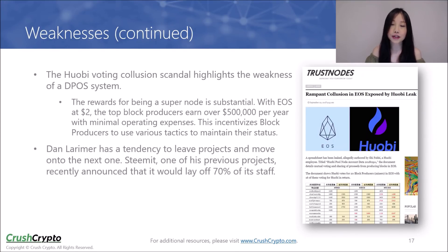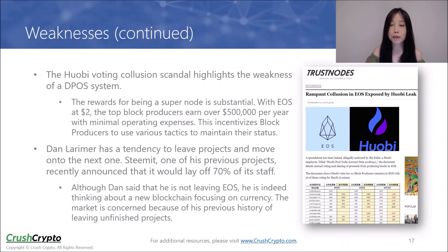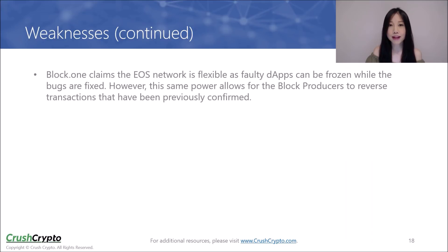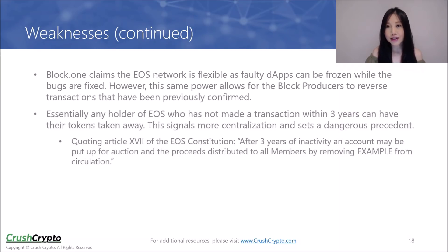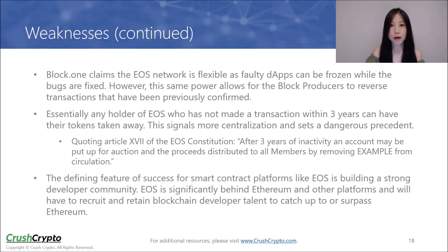Dan Larimer, the CTO, has a tendency to leave current projects and move on to the next one. Steemit, one of his previous projects, recently announced that it would be laying off 70% of its staff. Although Dan has said he is not leaving EOS, he has said he is thinking about a new blockchain focused on currency, and the market is concerned because of his previous history of leaving unfinished projects. BlockOne claims the EOS network is flexible in that faulty dApps can be frozen, but this same power allows block producers to reverse transactions that have been previously confirmed — one of the biggest features of blockchain technology is immutability, but this is not present in the EOS network. According to the EOS constitution, any EOS token holder who has not made a transaction within three years could have their tokens taken away, which signals more centralization and sets a dangerous precedent. Finally, the defining feature of success for smart contract platforms like EOS is building a strong developer community, and EOS is still significantly behind Ethereum and other platforms.